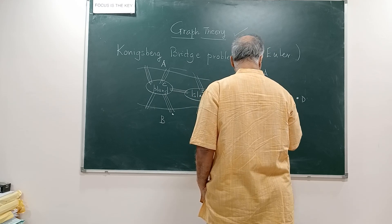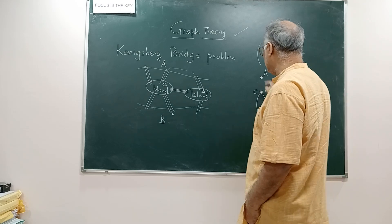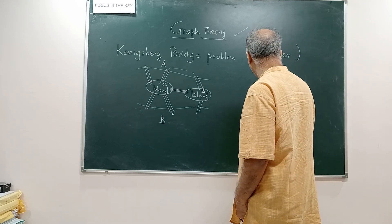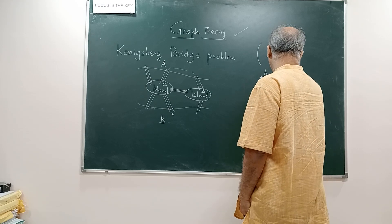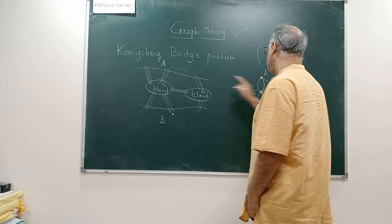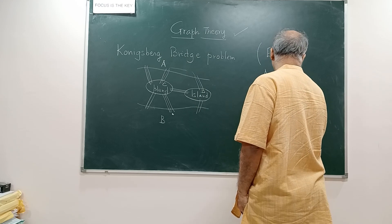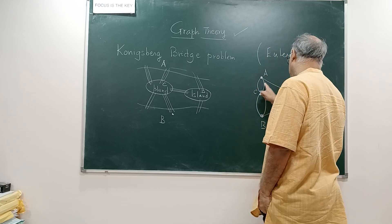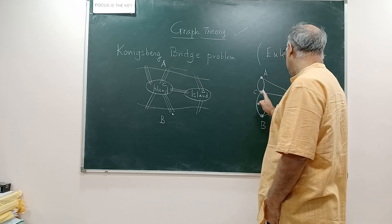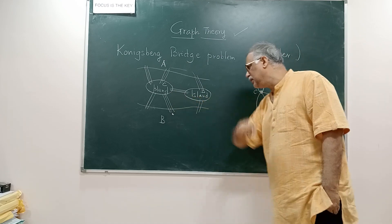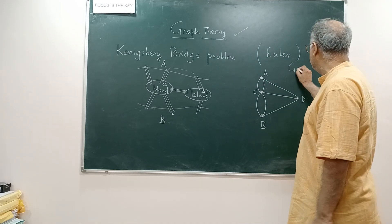So B to C, there are two islands, so we connect them by two edges. Two bridges from B to C and C to A, there are two islands. A to D, there is one bridge, B to D, there is one bridge, and C to D, there is an inter-island connection. So this is what is called the graph of the Königsberg problem.